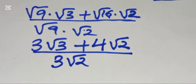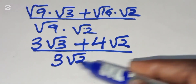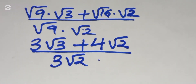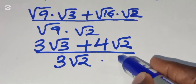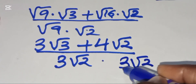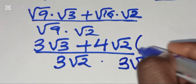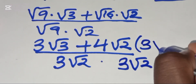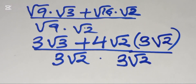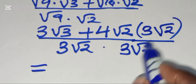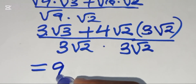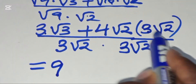The next phase is to rationalize the denominator by multiplying both the numerator and denominator by 3 square root of 2. So we proceed by multiplying: in the numerator, 3 times 3 gives 9, and we have square root of 3 times square root of 2.